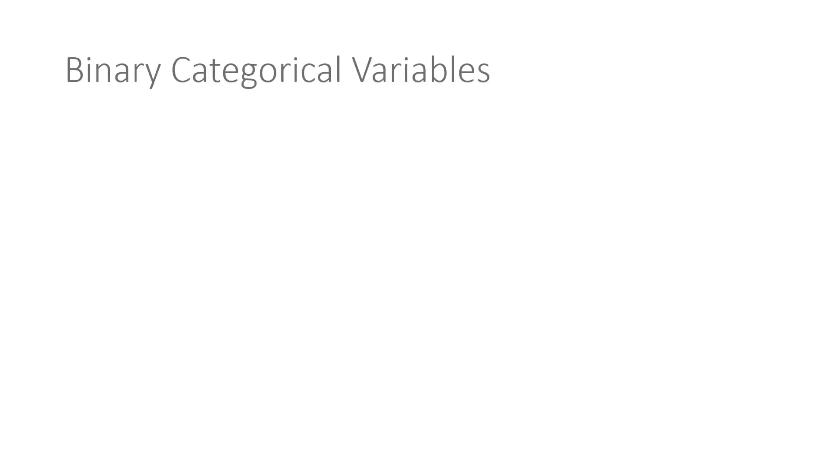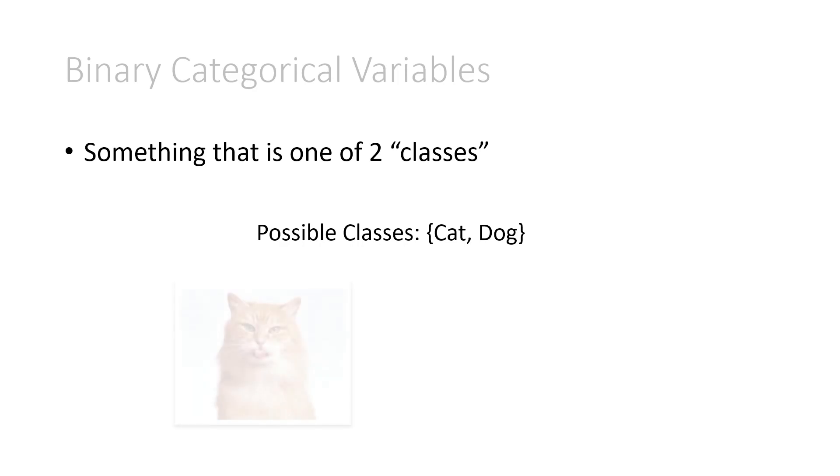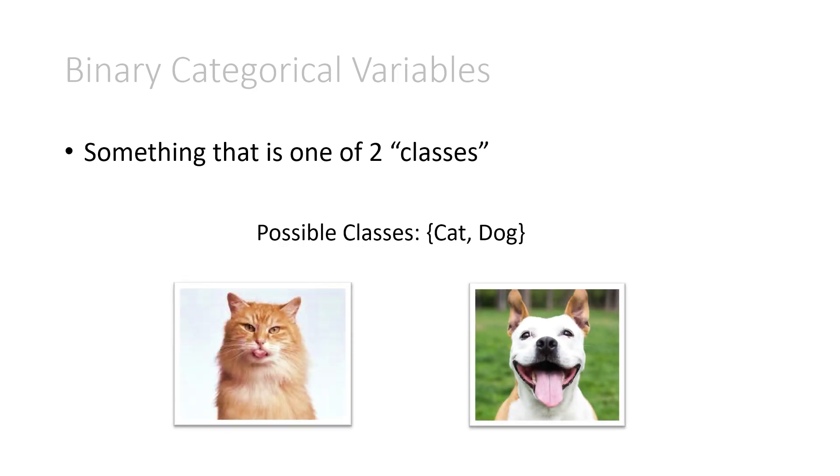Now let's look at a bit of a special case of binary categorical variables. A binary variable is something that is one of two classes, so on-off, fraud or not fraud, or just one of two different things. One example as well is the possible classes are either cat or dog, so our images are either cat images or dog images. This is binary because there's only two possible answers.